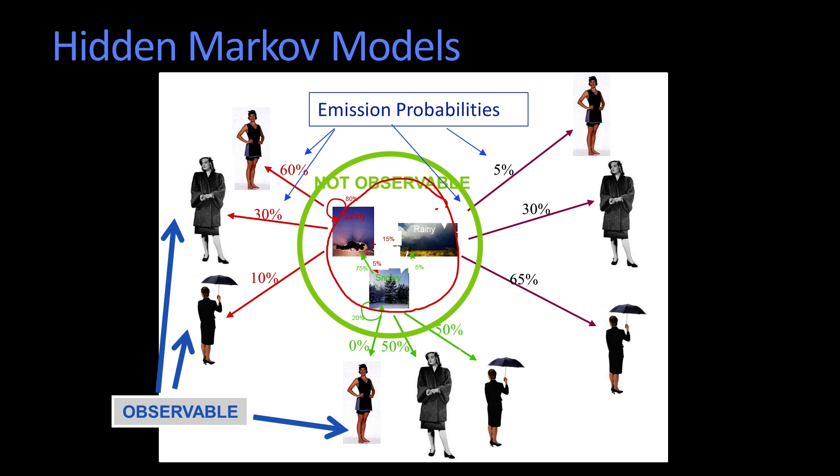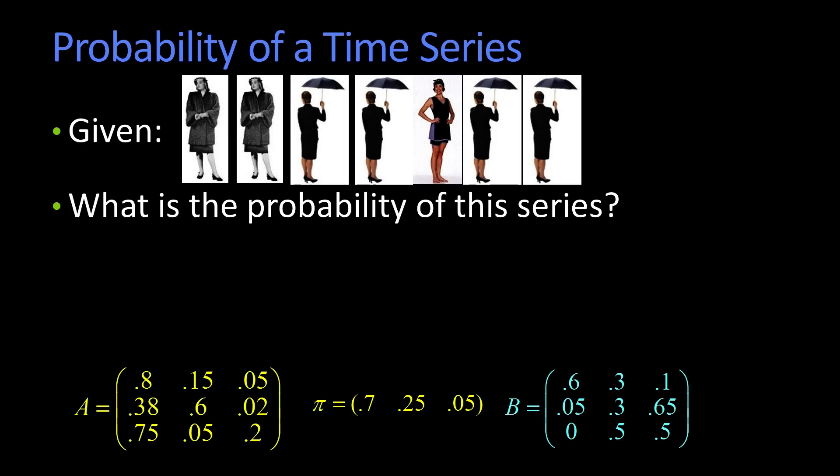Instead, we're going to ask about the likelihood, or the probability, of seeing a particular sequence of observations. So that's shown here. So you could say, given this sequence of observation, coat, coat, umbrella, umbrella, bathing suit, umbrella, umbrella. What's the probability of that series, of that sequence of observations?